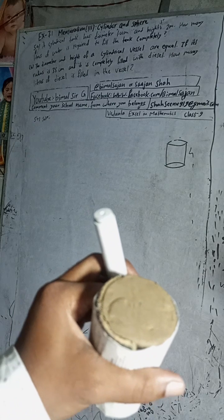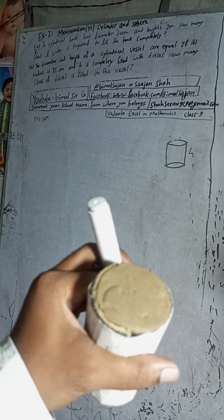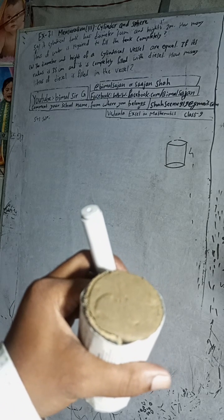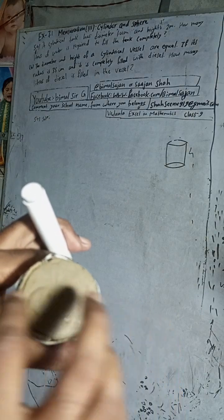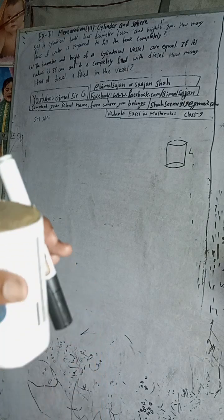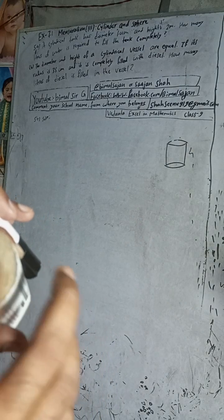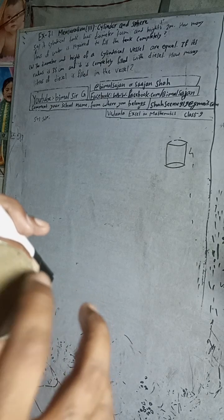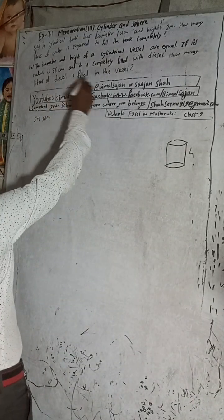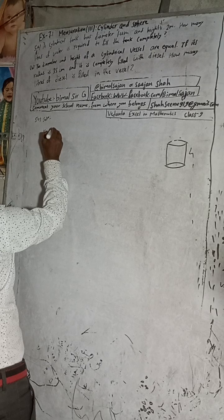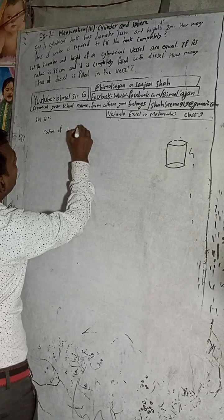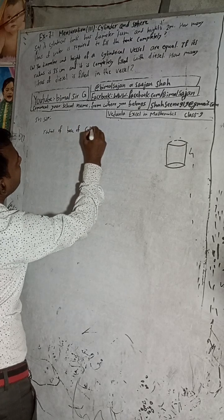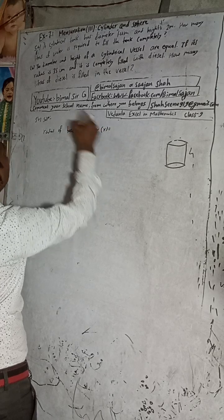The question 5E states: the diameter and height of a cylindrical vessel are equal. If its radius is 35 cm and it is completely filled with diesel, how many liters of diesel is filled in the vessel? The radius of the base of the cylinder, r, is equal to 35 cm.